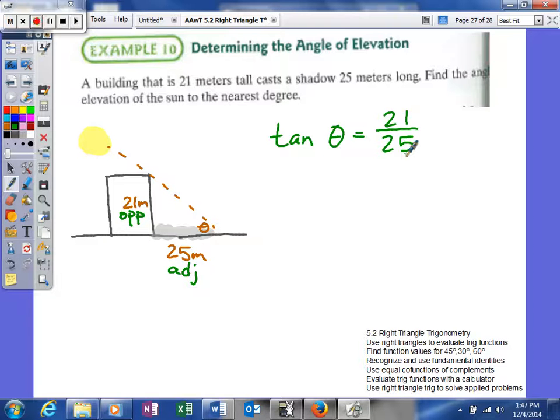Now we solve for the angle. We're taking the tangent of our angle, so to isolate it, we use the inverse operation. The inverse of tangent is arctangent. Each primary trig function has an arc version that serves as its inverse operation.